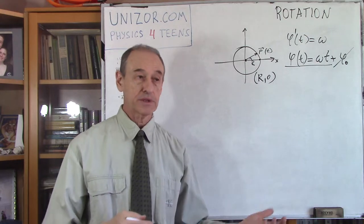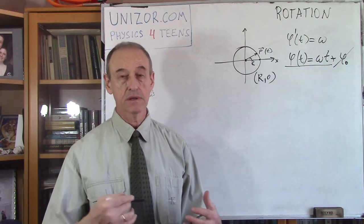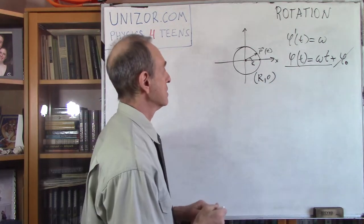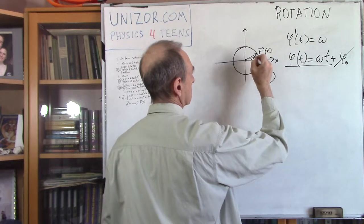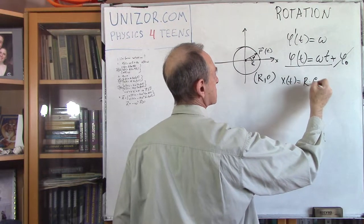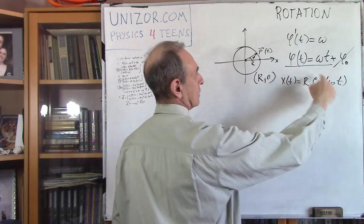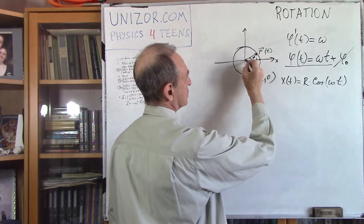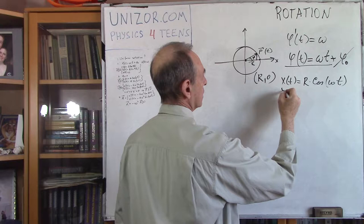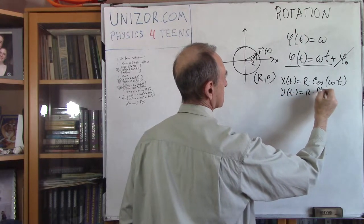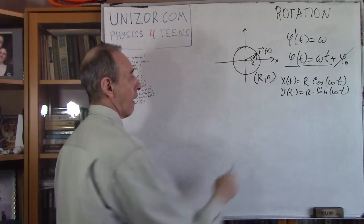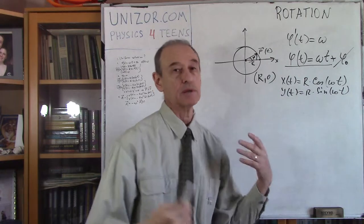Now we're talking about angle, but we need the coordinates — the equations of motion in coordinate form. That's very easy, because if the angle is φ = ωt, then x(t) = r·cos(ωt) and y(t) = r·sin(ωt), where ω is constant and r is also given. So that's how we get our equations of motion.